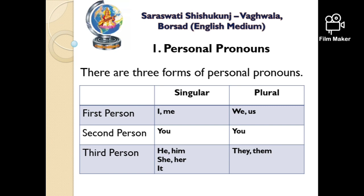Personal pronouns can be singular and plural. In first person singular: I, me; plural: we, us. In second person, 'you' remains the same for both singular and plural. In third person singular: he, him, she, her, it; and in the plural: they, them. Try to understand this chart — how the three personal pronouns are organized into singular and plural forms. We already use these words in our sentences.